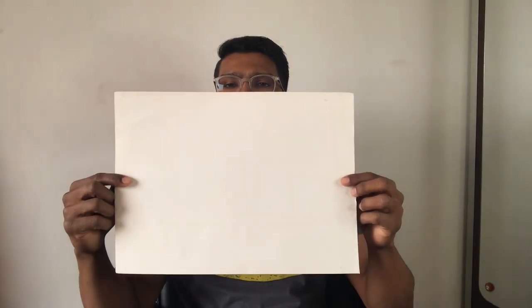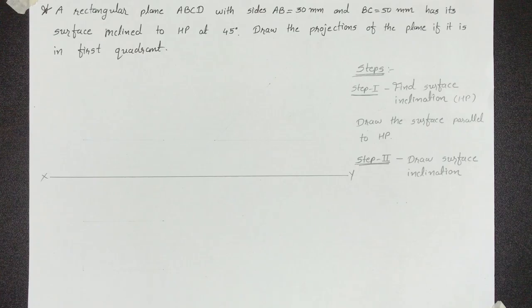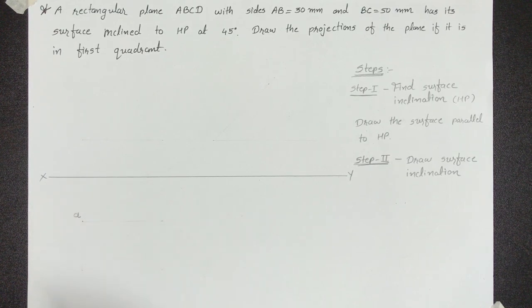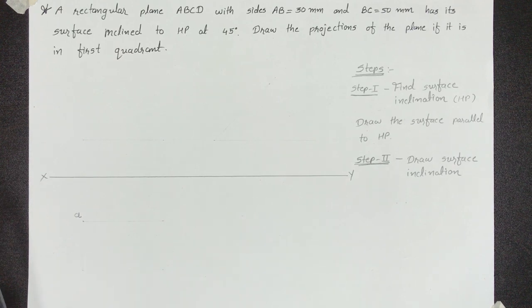Projection of plane के किसी भी question में सबसे पहले आपको surface inclination find करनी है. अगर surface horizontal plane के साथ inclined है तो Step 1 में हम plane को HP के parallel assume करेंगे. यहाँ पे rectangle ABCD horizontal plane के साथ 45 degree का angle बना रहा है, तो Step 1 में इसको HP के parallel assume करेंगे. इस condition में हमें plane का true shape top से मिलेगा — जो होगा rectangle — और front view में हमें line मिलेगी. यहाँ पे कोई भी line का HP और VP से distance नहीं दिया, तो below XY कहीं पे भी point A mark कर सकते हो.